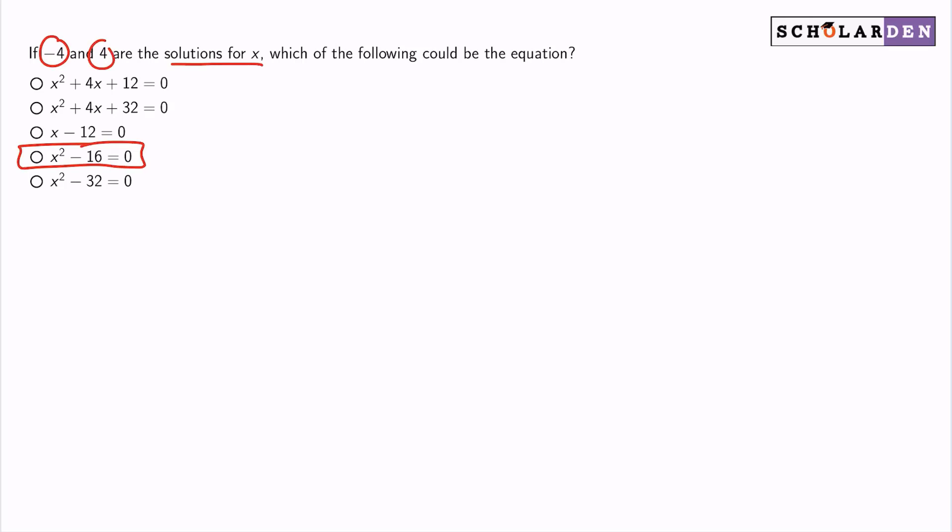Because what that tells me is that if x can be negative 4 or positive 4, let's just do ourselves the favor and watch this. Let's add 4 to both sides here. We have x plus 4 equals 0, and we have x minus 4 equals 0.